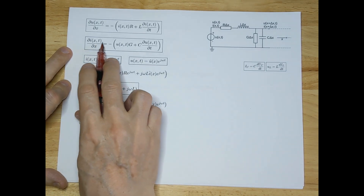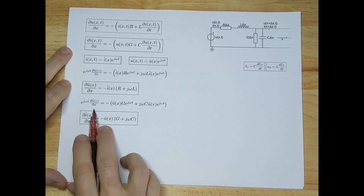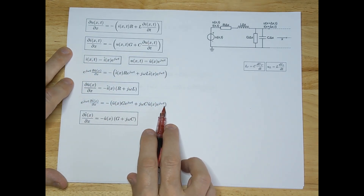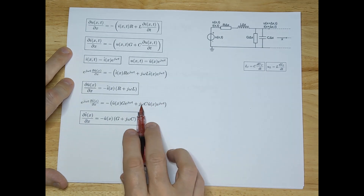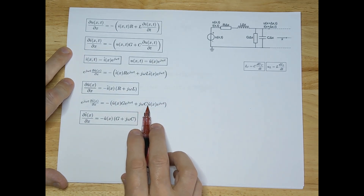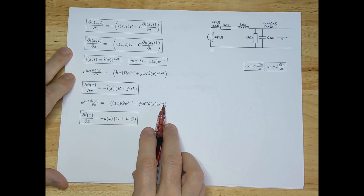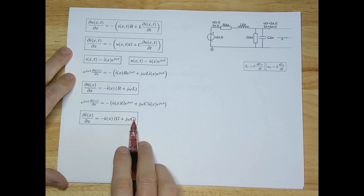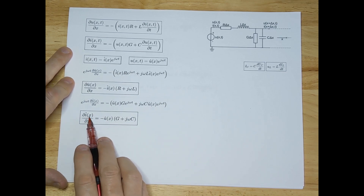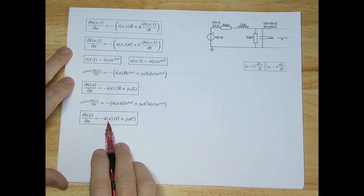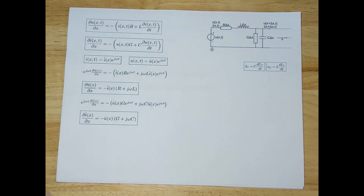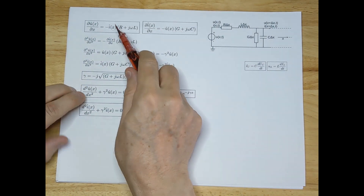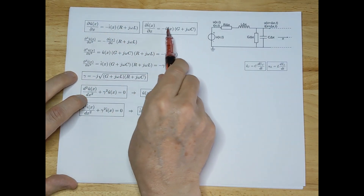We do the same with the second equation. Filling in the phasor forms, differentiating U with respect to T gives a jω factor, yielding: dÎ/dx = −Û(x)·[G + jωC]. Again the e^(jωt) terms cancel. These are the two ODEs we have derived. However, they are linked — each depends on the other — which is inconvenient and hard to solve.